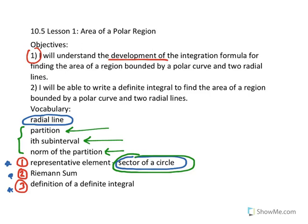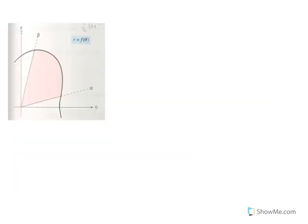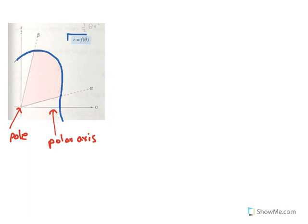Let's take a look at the development of the integration formula for finding the area of a region bounded by a polar curve and two radial lines. We want to begin by defining our problem. What you observe here in this diagram is a polar region sketched on the polar plane. Here's the pole, here we have the polar axis, and here traced in blue is the graph of our polar equation given by r is equal to some function of theta. Our region of interest, whose area we want to find, is shaded pink and it is bounded by the graph of our polar curve and these two radial lines.